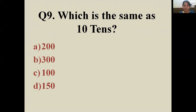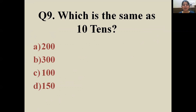Question number nine: which is the same as 10 tens? Think of tens: 10, 20, 30, 40, 50... If you have 10 tens — 10 more after 90 makes 100. So the correct answer is C: 100. Very good!